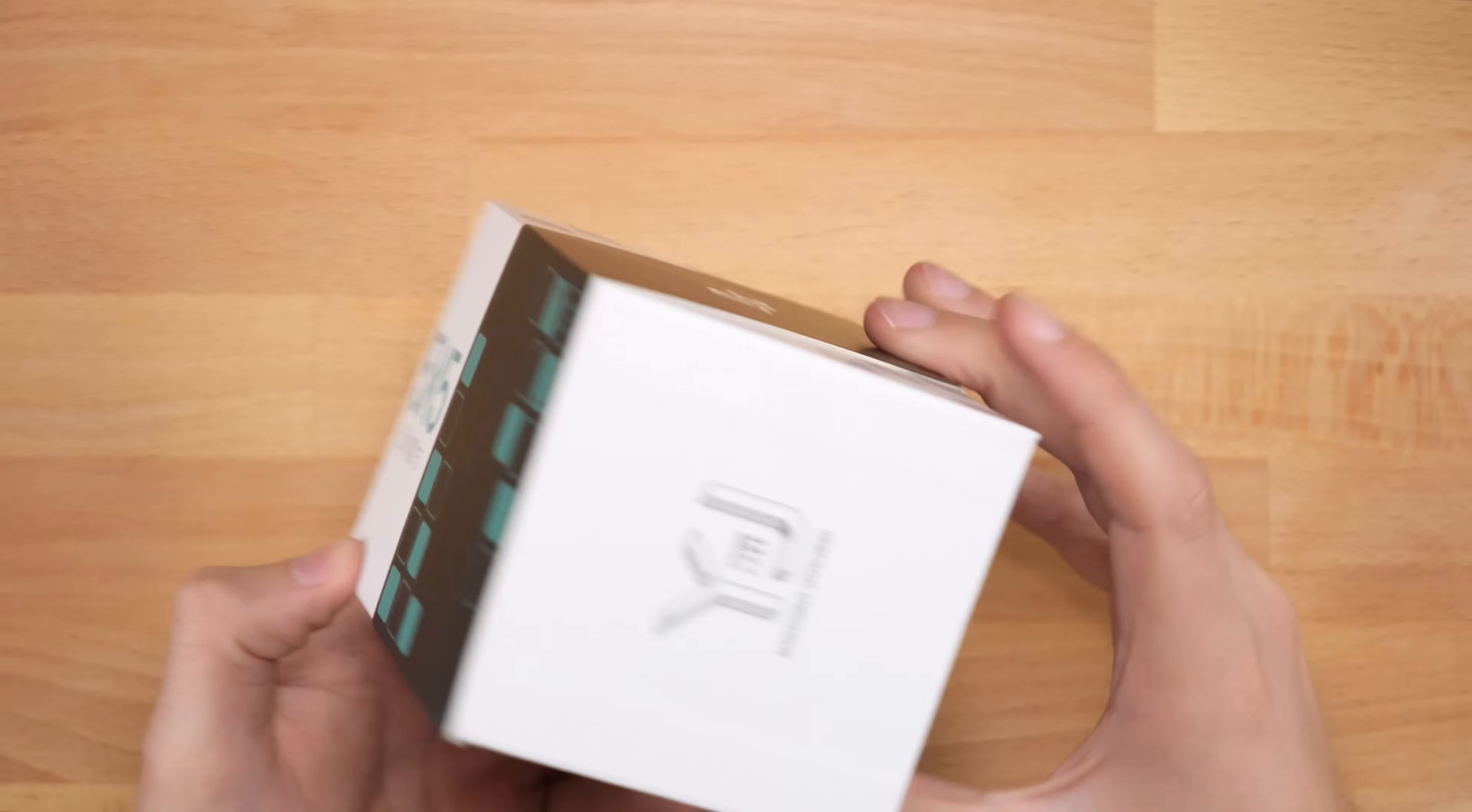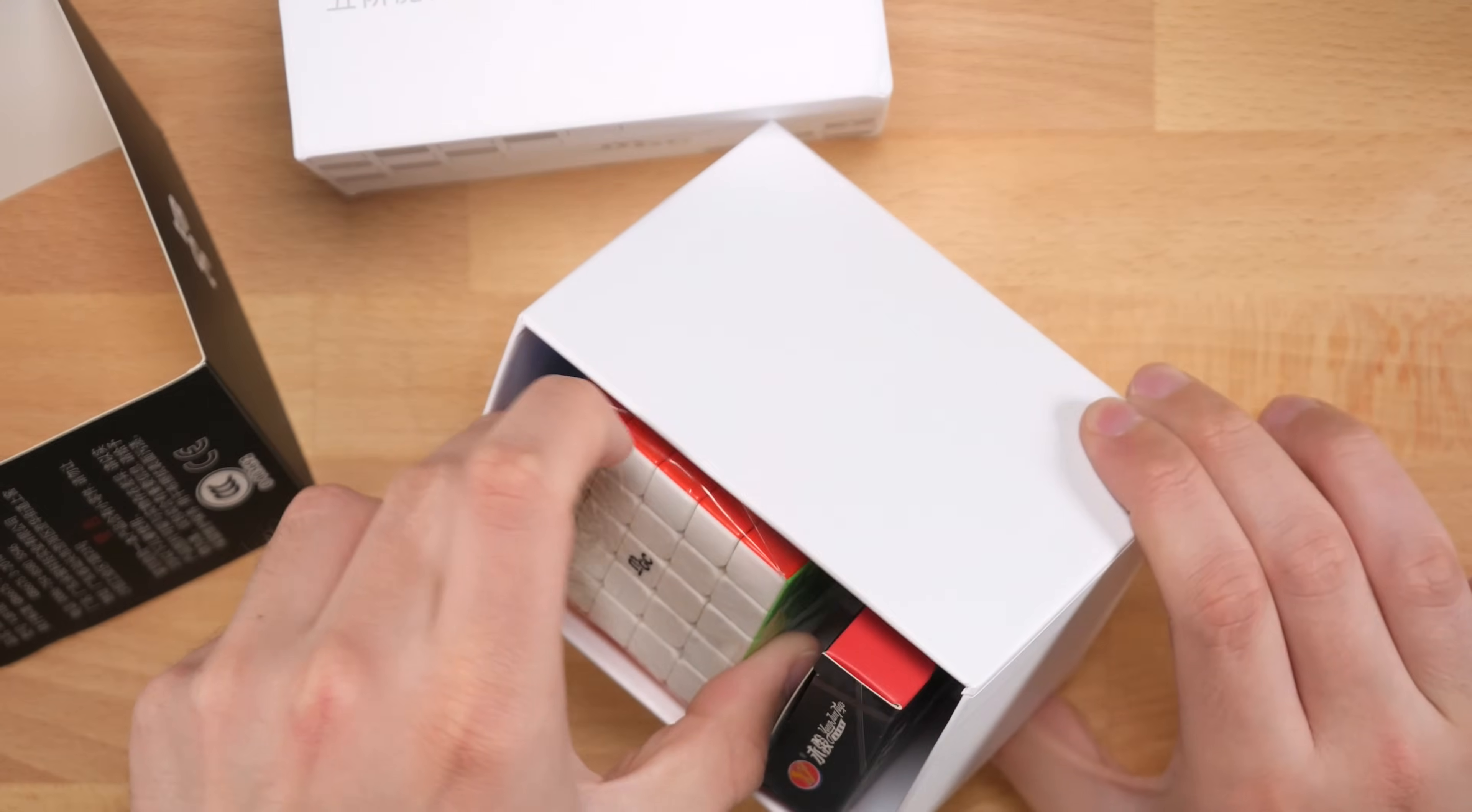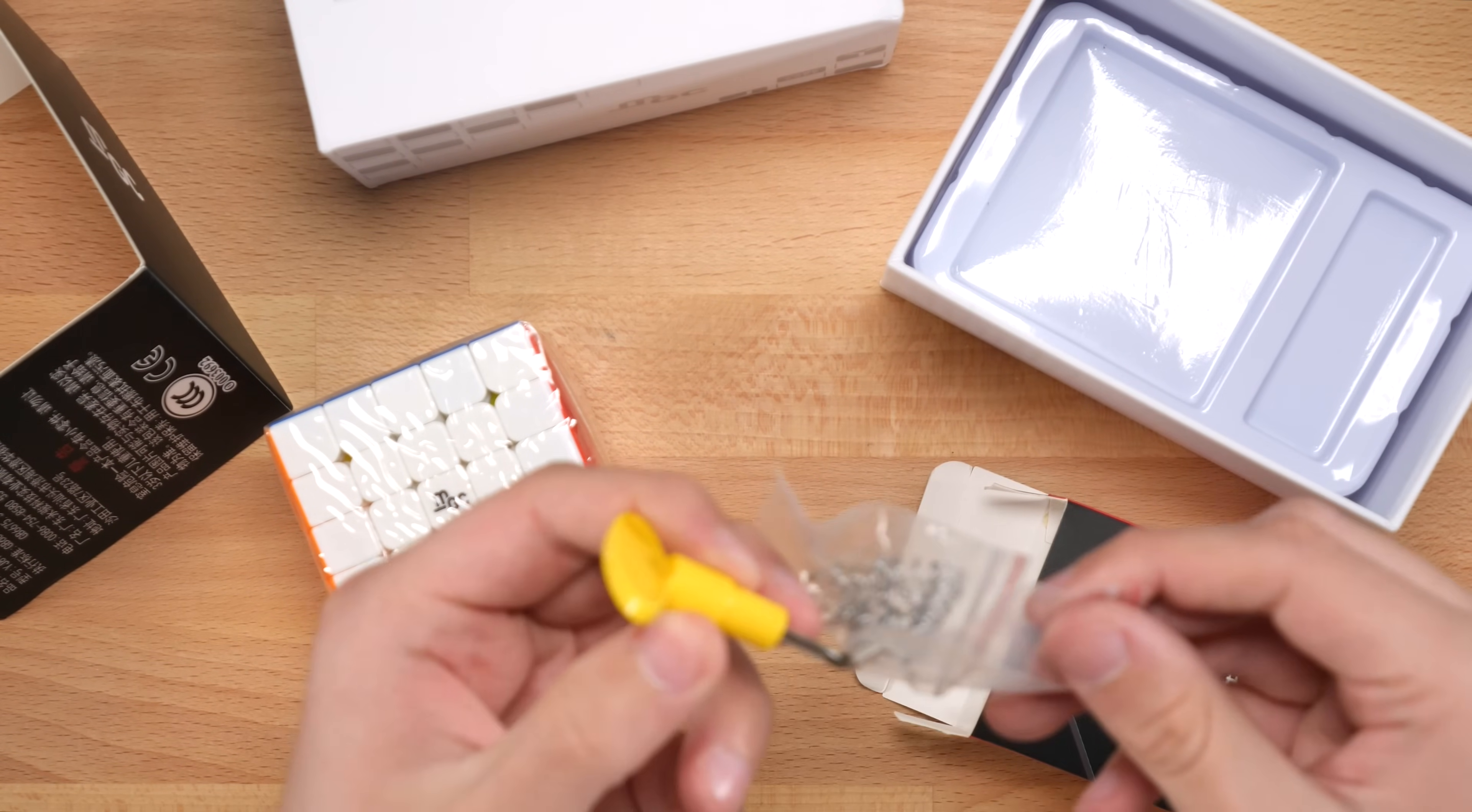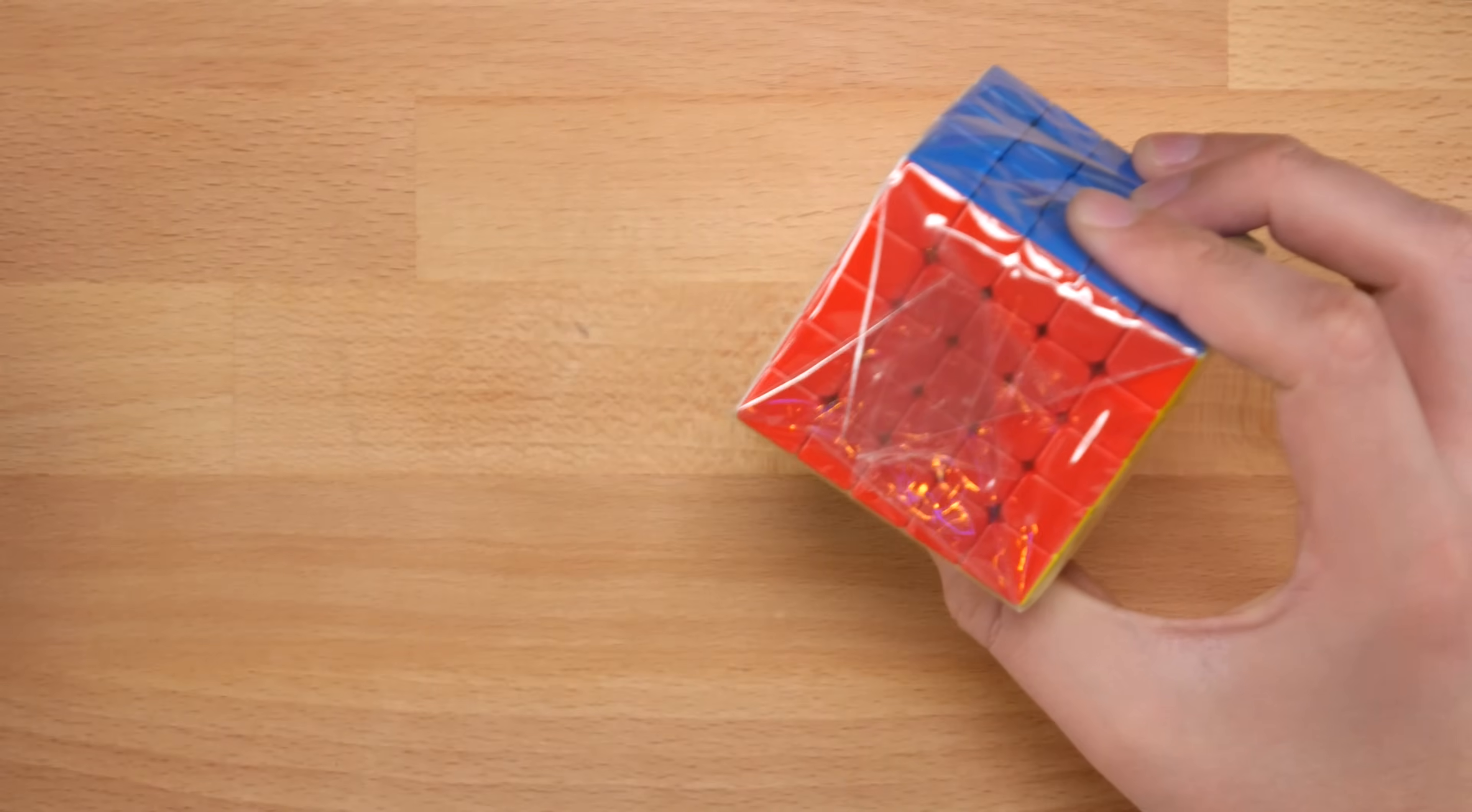So this is a very interesting box, I really like the design of it. It's got this little plastic insert. So then the box opens this way. All right, we get the puzzle in stickerless and a little accessory kit. So in here we get what looks like a very interesting screwdriver. That's pretty cool. As well as some spare magnets and some spare hardware. It looks like a spring change and some washers. All right, so let's go ahead and check the puzzle out.